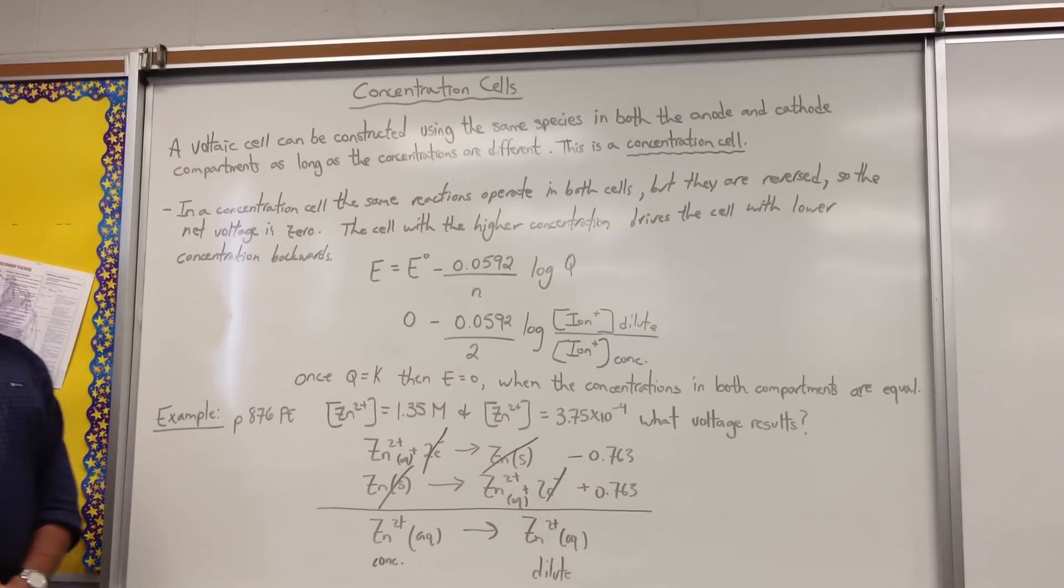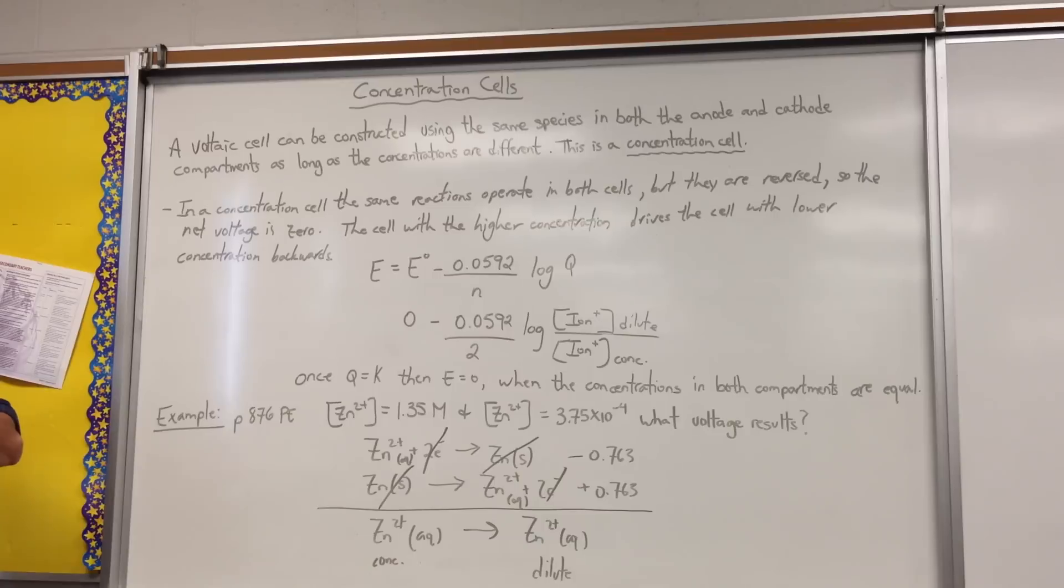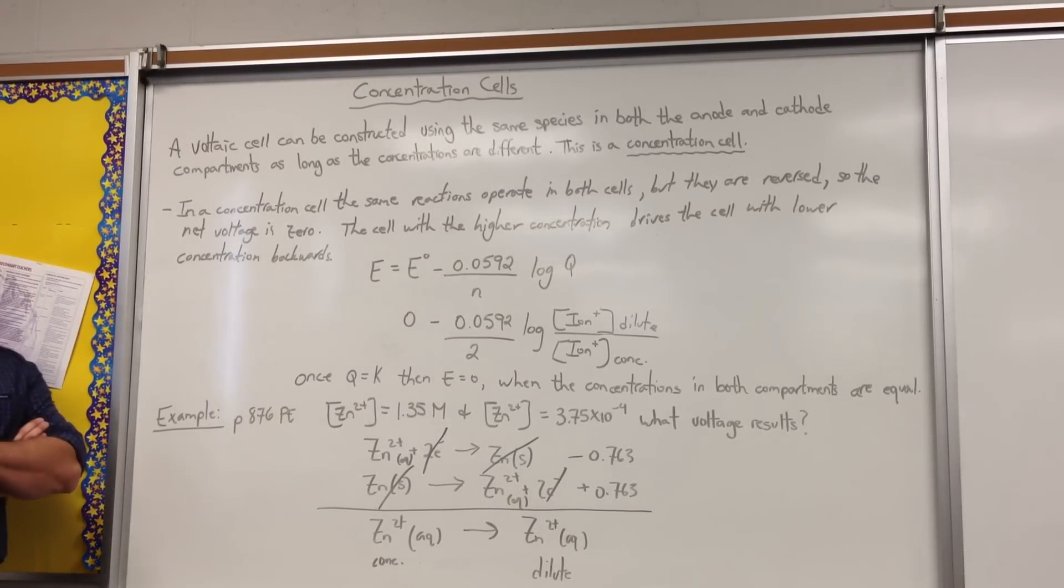There's one more idea we want to explore with regard to the Nernst equation, and that is when we have what's called a concentration cell. A voltaic cell can be constructed using the same species in both the anode and cathode compartments, as long as the concentrations are different. This is known as a concentration cell.